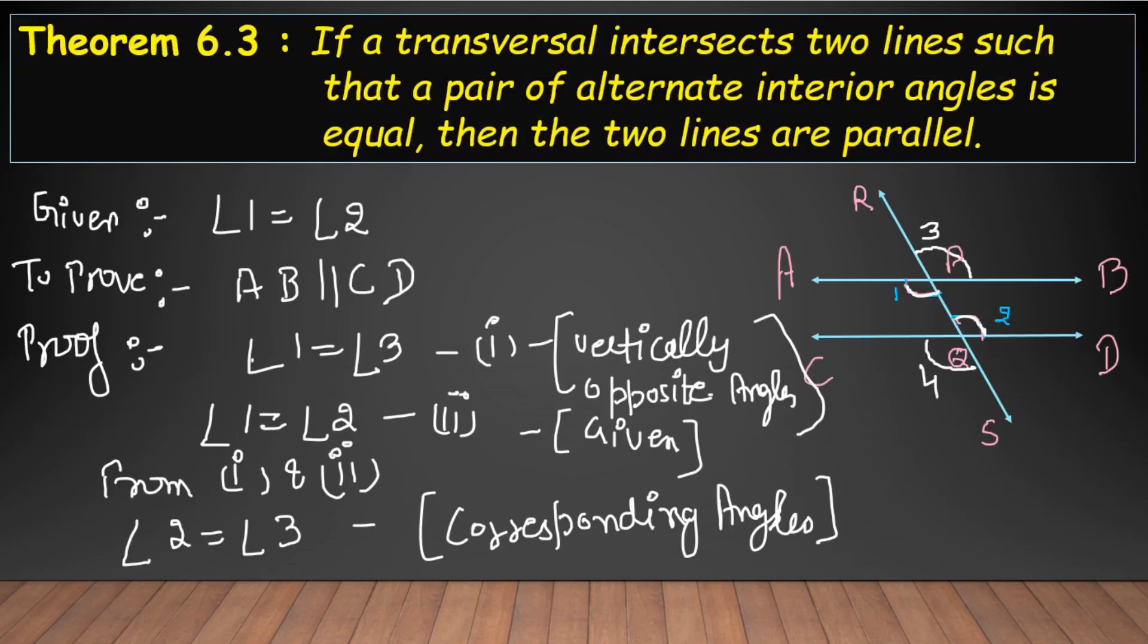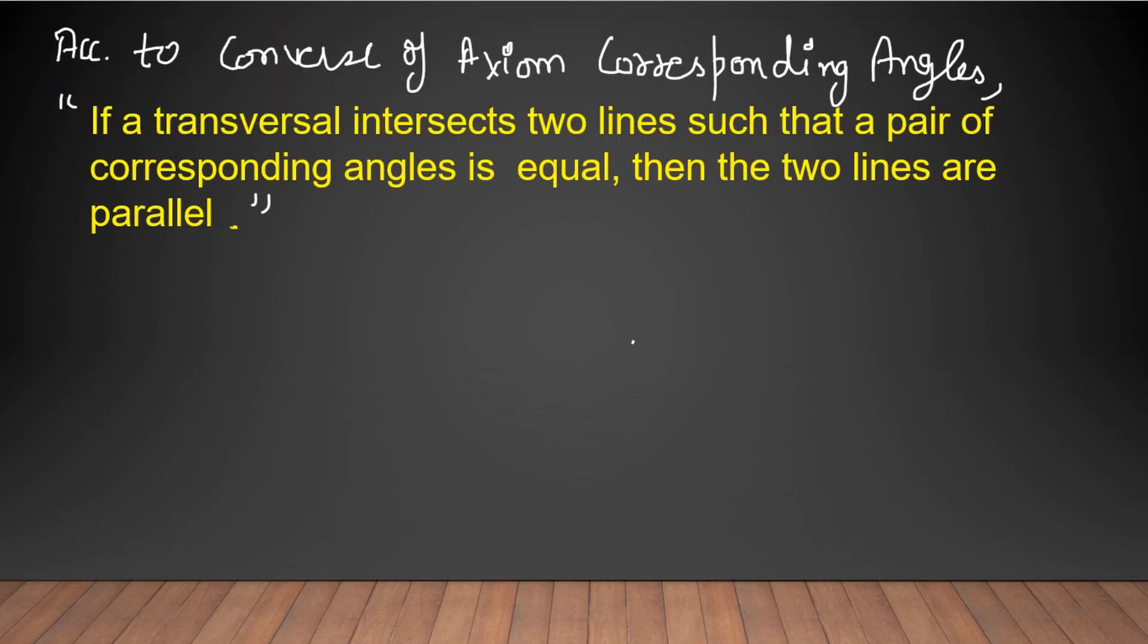So angles 2 and 3 are corresponding angles and we showed they are equal. By the converse of the corresponding angles axiom, AB is parallel to CD. Hence proved.